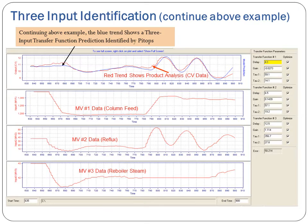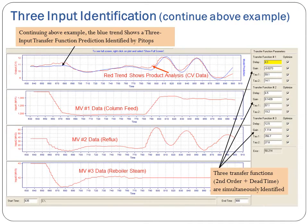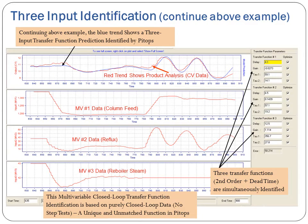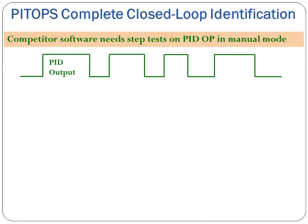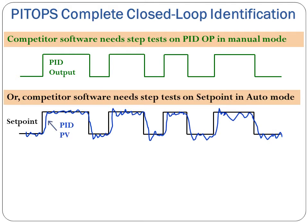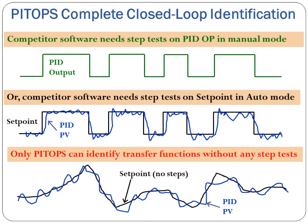Continuing with the above example, the blue trend shows a 3-input transfer function prediction identified by PyTops. Three transfer functions, second-order plus dead time, are simultaneously identified. This multivariable closed-loop transfer function identification is based on purely closed-loop data — no step tests — a unique and unmatched function in PyTops. Competitor software needs step tests on PID-OP in manual mode, or step tests on setpoint in auto mode. Only PyTops can identify transfer functions without any step tests.